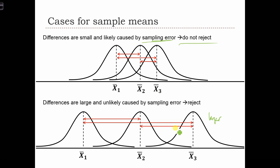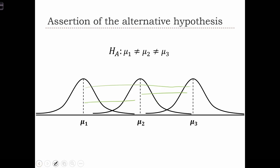But if the differences are large, then if they become too large, then it becomes unlikely that those differences are caused by sampling error. However, it becomes more likely that the null hypothesis is wrong, and it becomes more likely that the alternative hypothesis is true, that the three population means are in fact different.